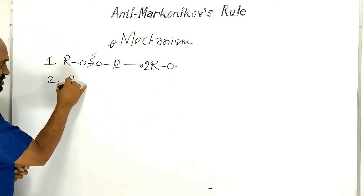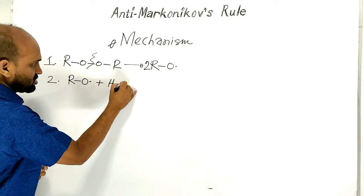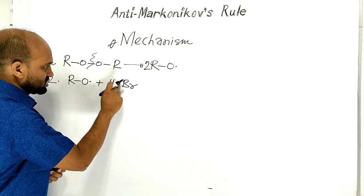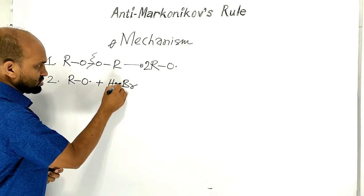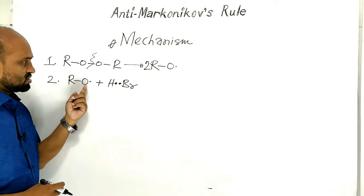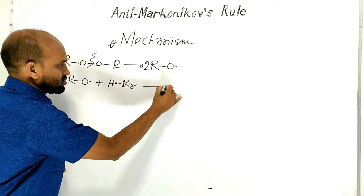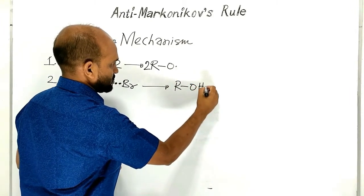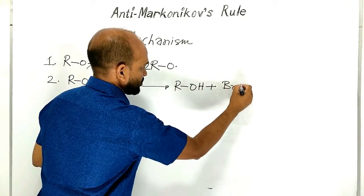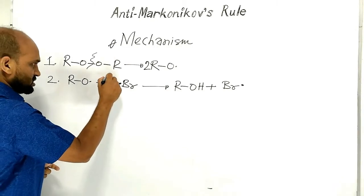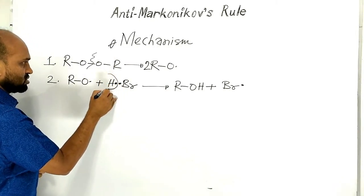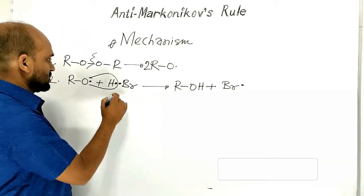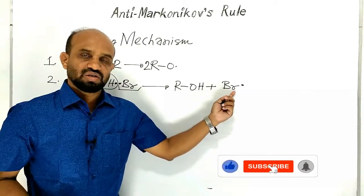Step 2: this alkoxide radical reacts with hydrobromic acid. A covalent single bond consists of two electrons. Free radical mechanism proceeds here. This hydrogen, with its electron, combines with the alkoxide radical, forming an alcohol. In this way, alcohol is formed and bromine is freed as a bromine free radical.